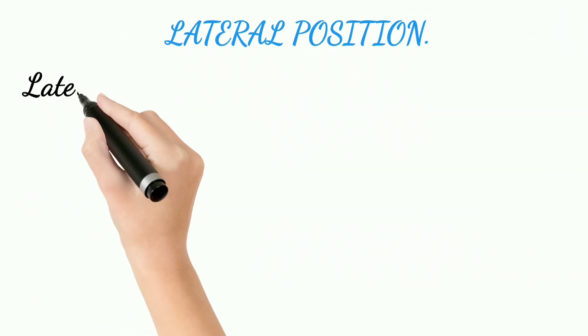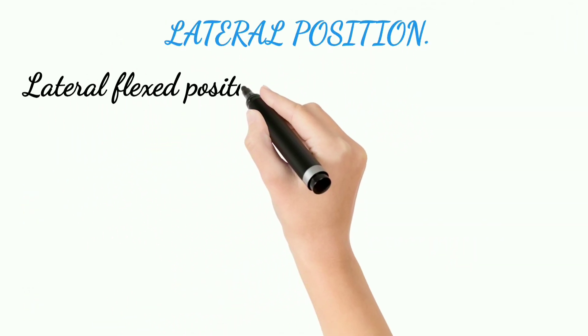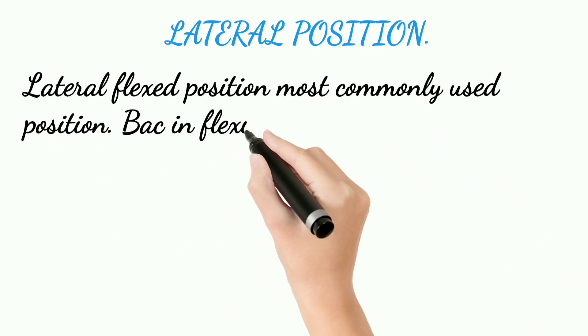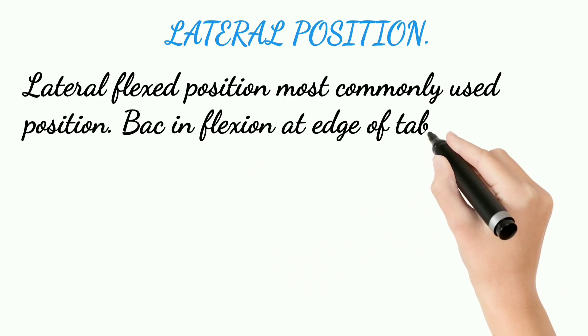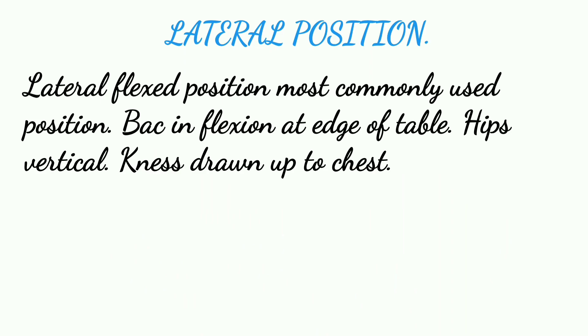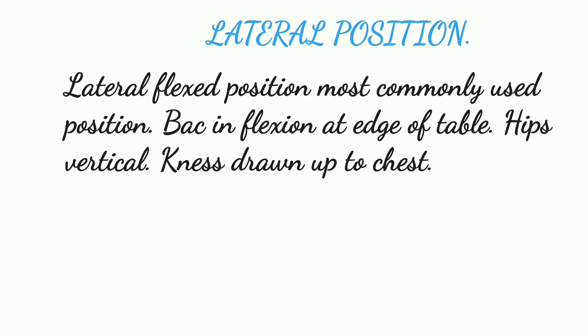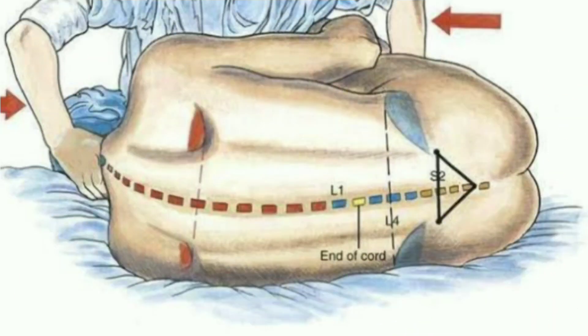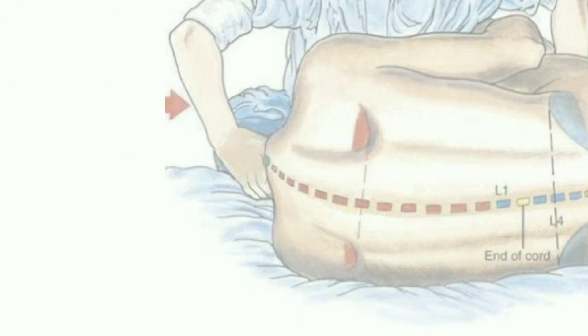Position 2: lateral flexed position — the most commonly used position. The patient lies at the edge of the table with the back flexed, hips vertical, and knees drawn up to the chest. This maximizes separation of the lumbar vertebrae for needle insertion.